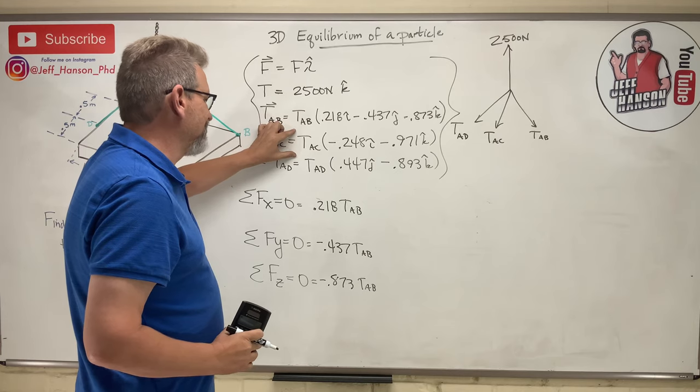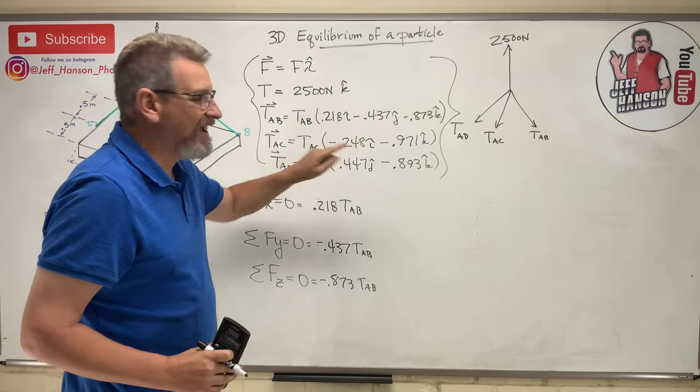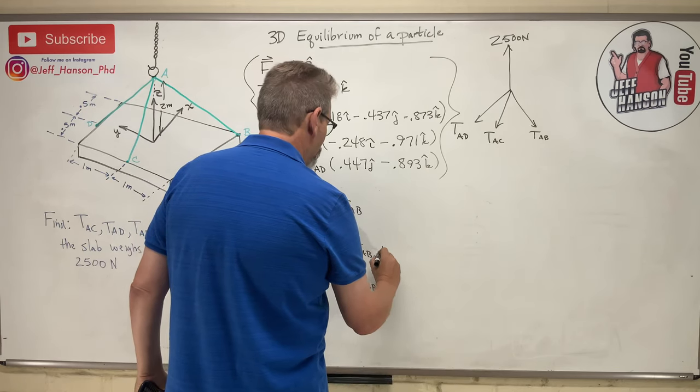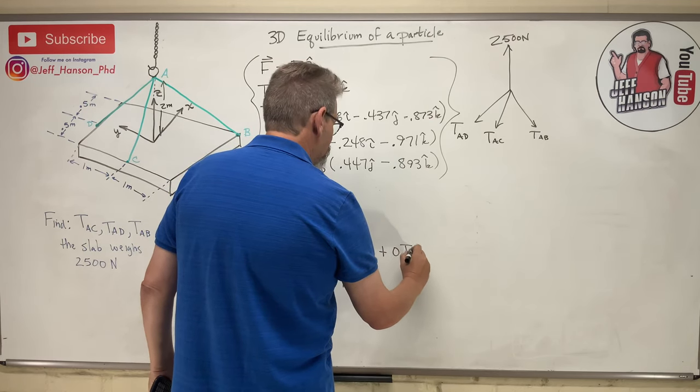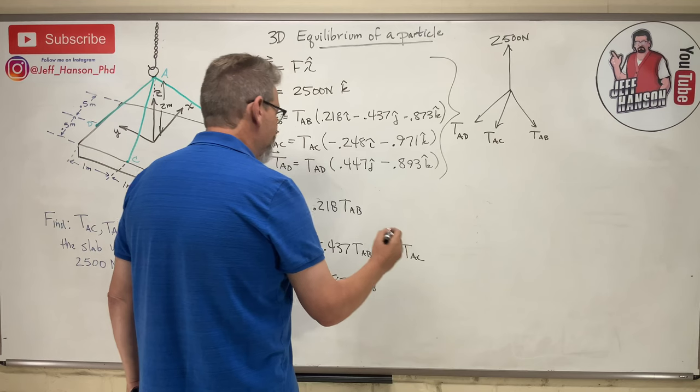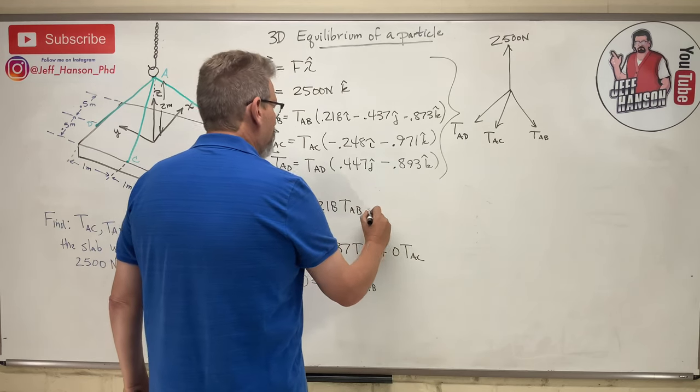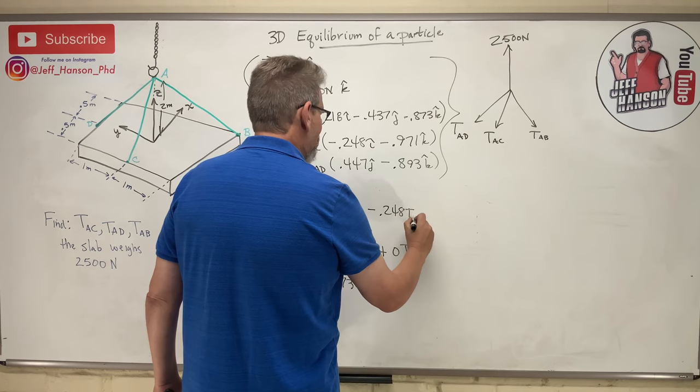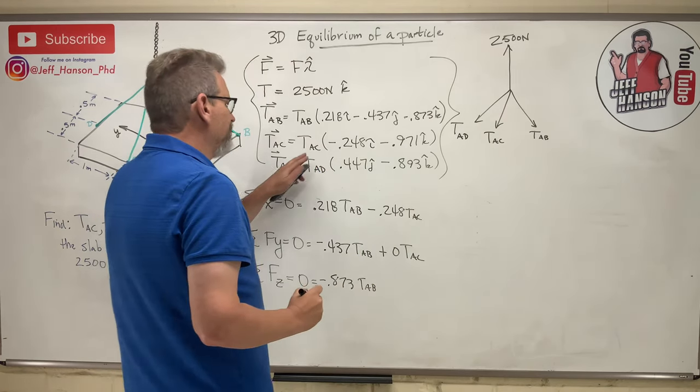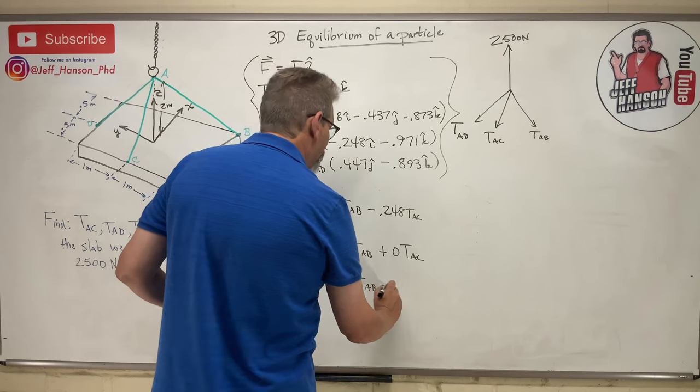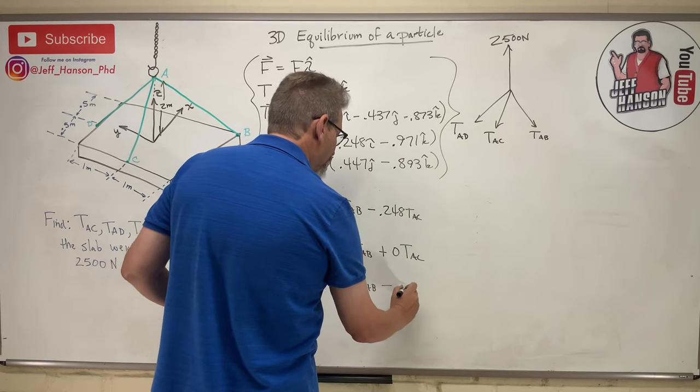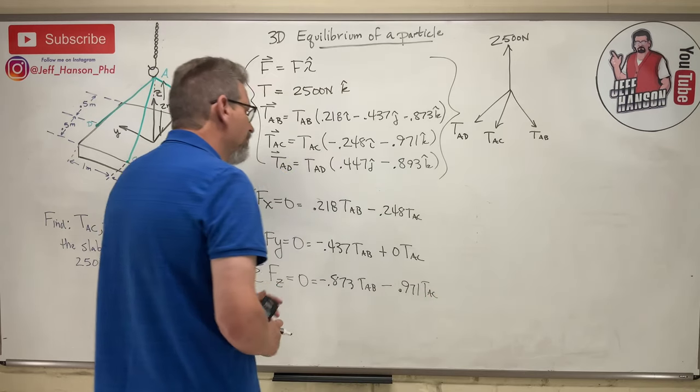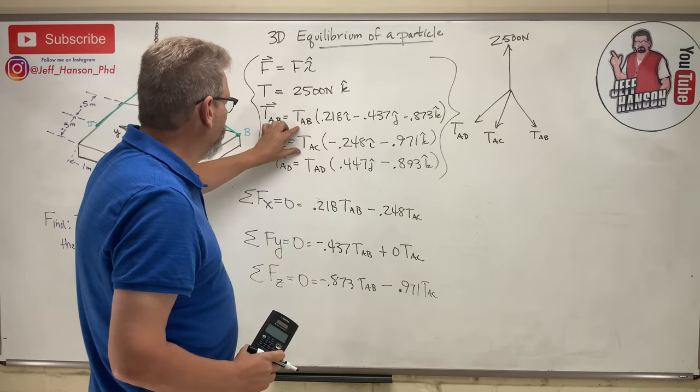Let's go to this guy, TAC. He just has an i and a k, he has no j. You know I'm going to still put him in there though, right? I'm going to put plus 0 TAC. He's there but he's not really there. And then minus 0.248 TAC. And then this guy here also minus, minus 0.971 TAC. So there's that one done.